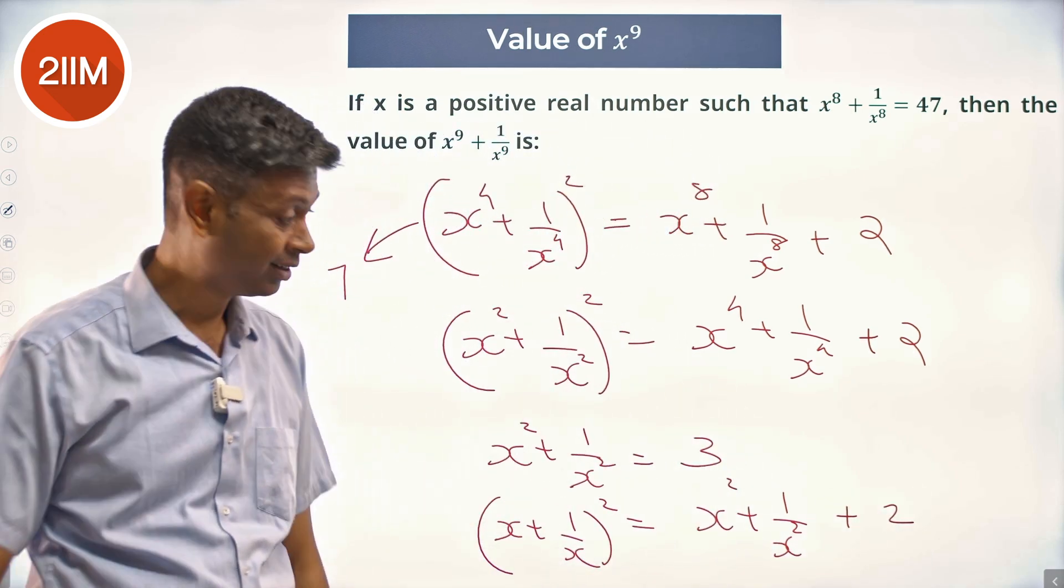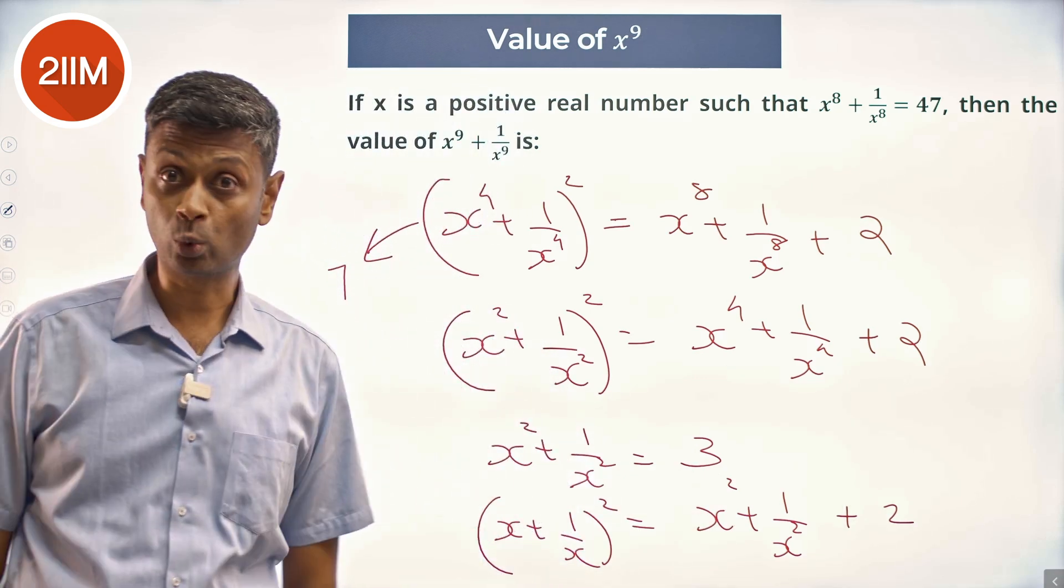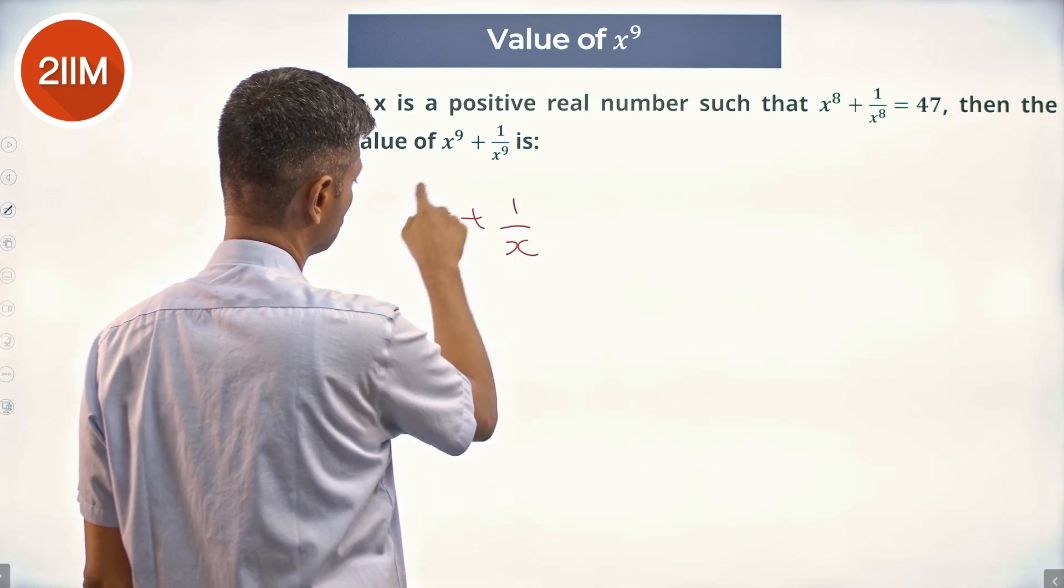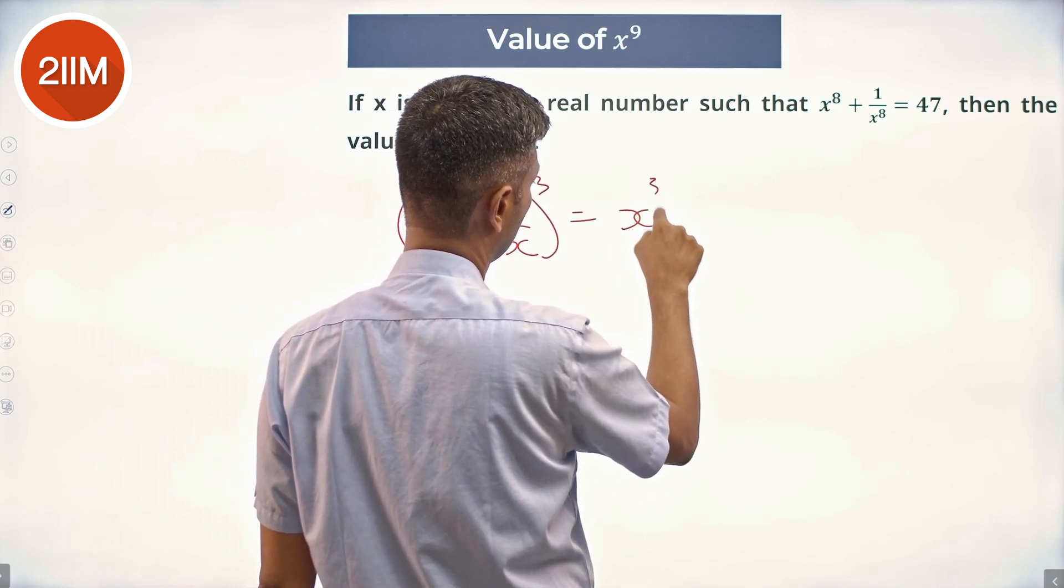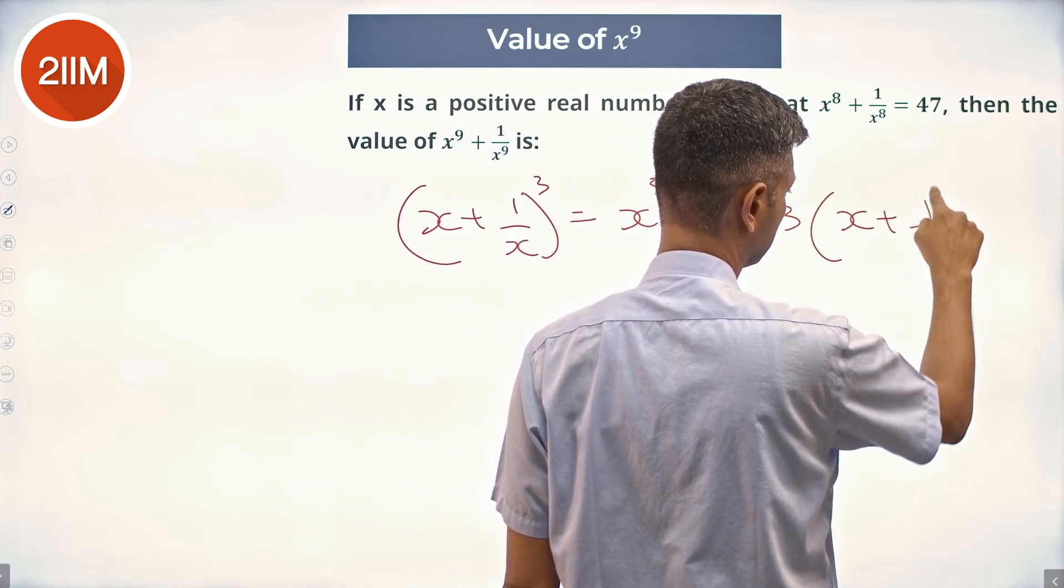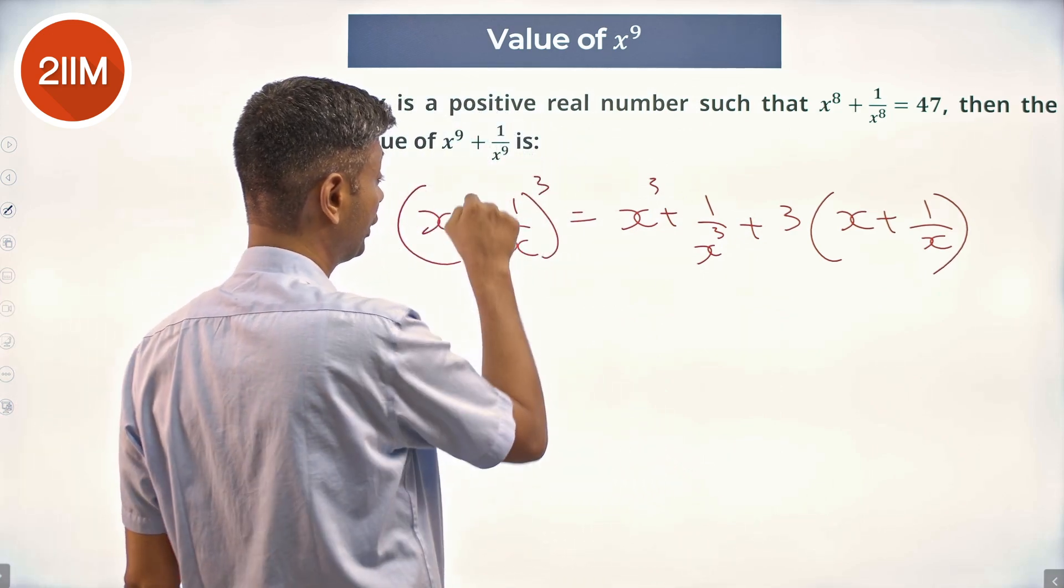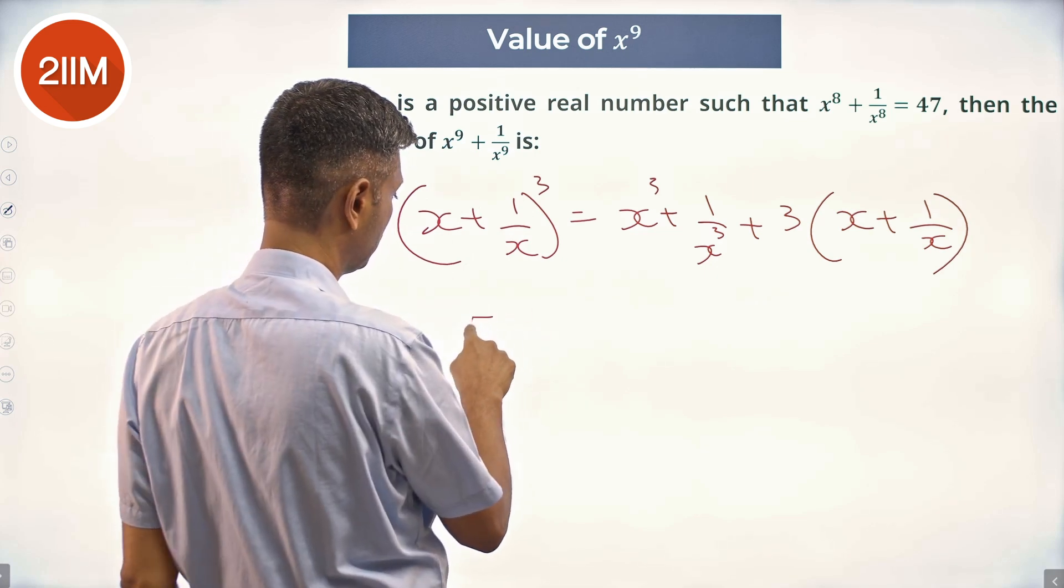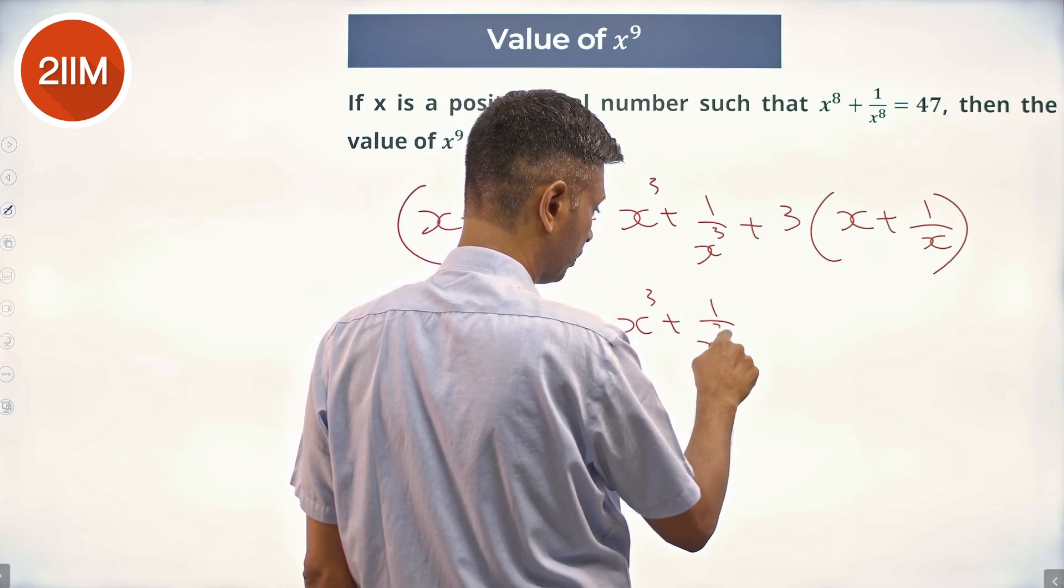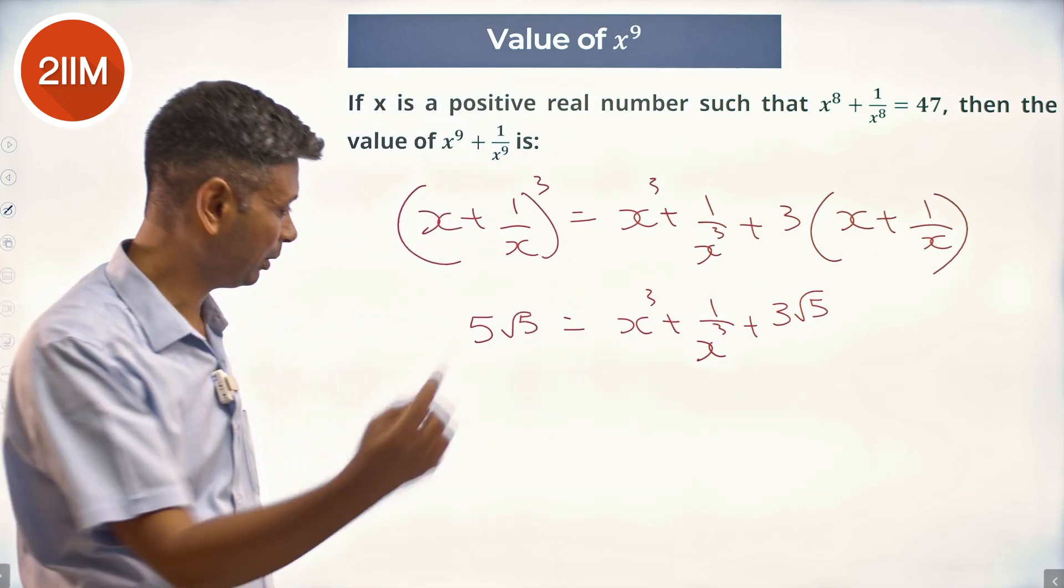So x + 1/x is √5. Nice, beautiful. So we take (x + 1/x)^3, which is x^3 + 1/x^3 + 3x(1/x)(x + 1/x). This is √5, so (√5)^3 = 5√5 = x^3 + 1/x^3 + 3√5. x^3 + 1/x^3 is 2√5. Plug that back in here.